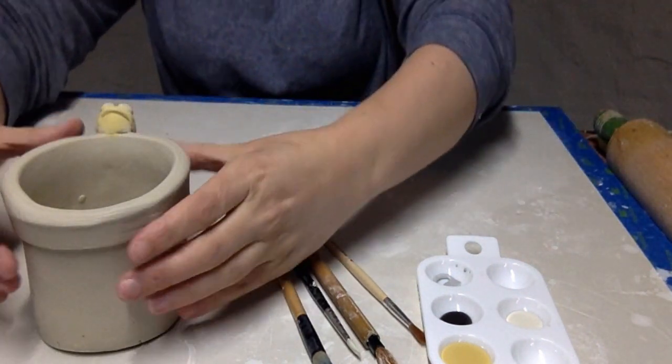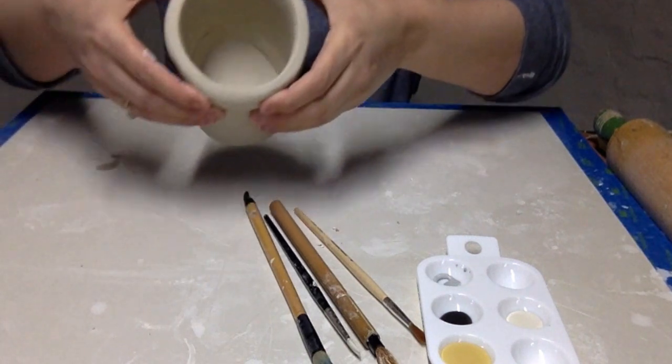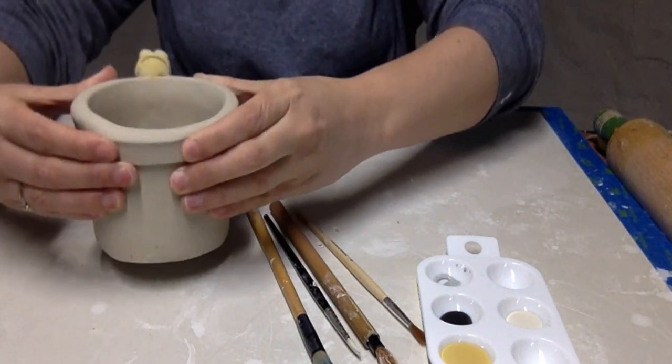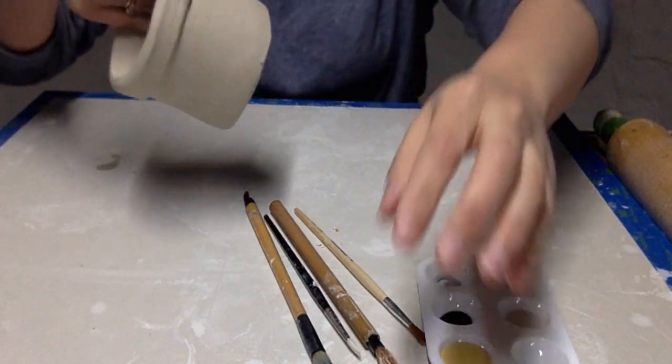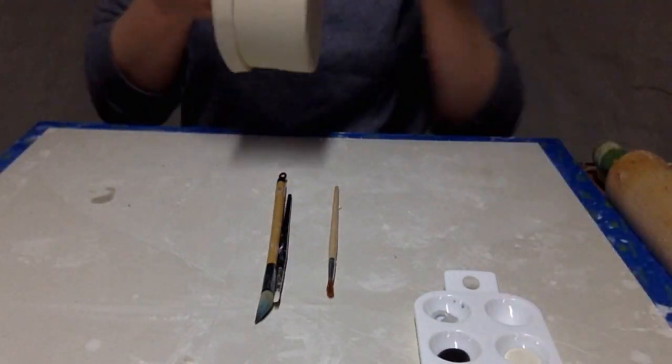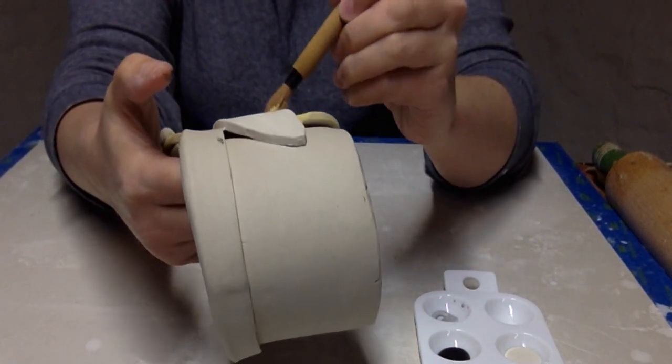If you need to leave the planter to dry for an extended period of time, I recommend wrapping it in plastic so it doesn't dry out too much. The goal is to have the clay be what we call leather hard, so that I can put the underglaze decoration on and not mess up the shape.